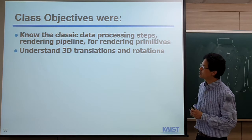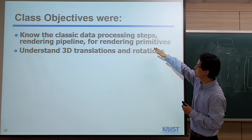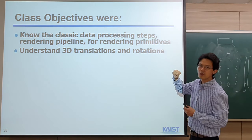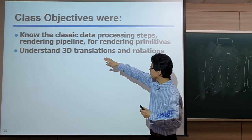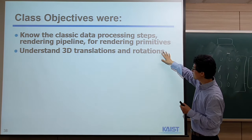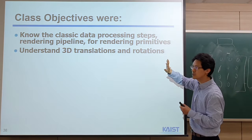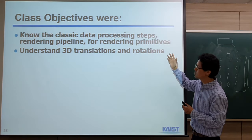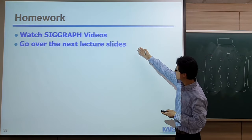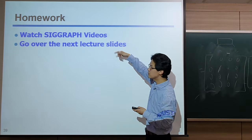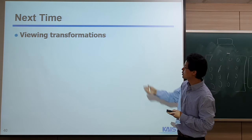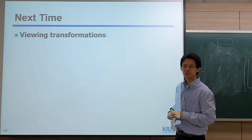By now, you should understand the classic rendering pipeline, where we use a lot of modeling transformation. We talked about 3D translation and the more important rotation concept based on the affine frame transformation. We didn't cover quaternions in detail. For regular homework, watch the next lecture video before Monday class. Next time we'll talk about viewing transformation. That's it — thank you, bye.